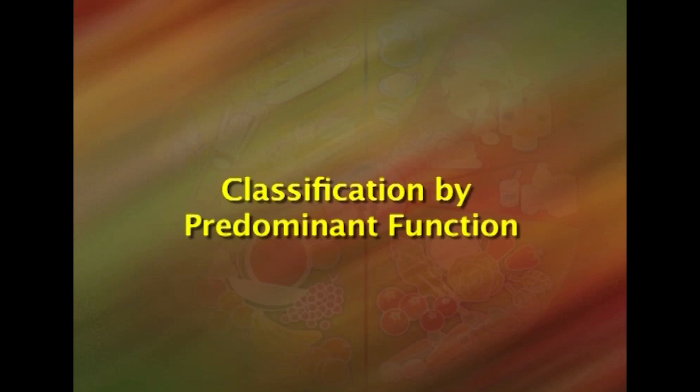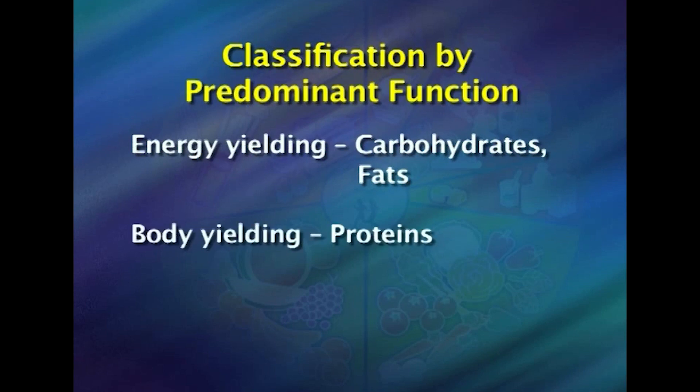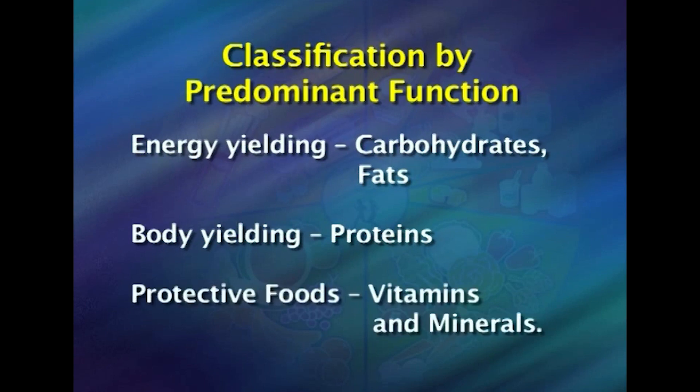The third classification of food is based on the functions they perform. Foods are classified as energy-yielding foods — which include carbohydrates and fats — body-building foods, which include proteins, and protective foods, which include vitamins and minerals.